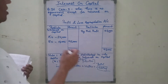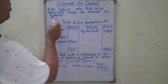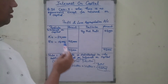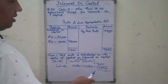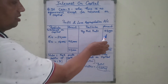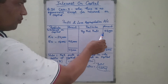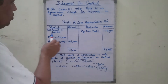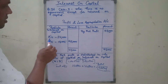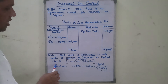In such cases, when there is no agreement except for interest on capital, and when the interest on capital is more than the profit, then the net profit is distributed as interest on capital between the partners in their capital ratio.